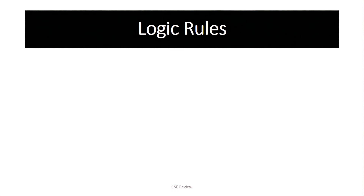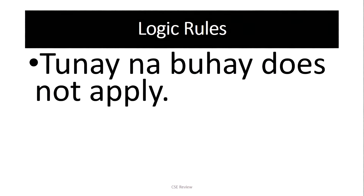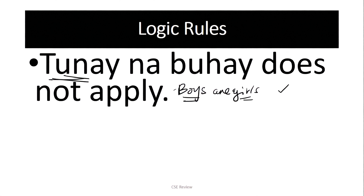We're going to talk about the word 'all.' Our logic rules — these are the things I always teach my students in live reviews. Rule number one: real life does not apply. Everything that happens in real life does not apply to the sentence. All we're going to talk about are the things directly stated in the statements given in the question. So whether that statement is true or not in real life, if the question tells you it's true, you just have to agree. For example, if it says that boys are girls — obviously that's not true — but if the statement says that, you would agree.